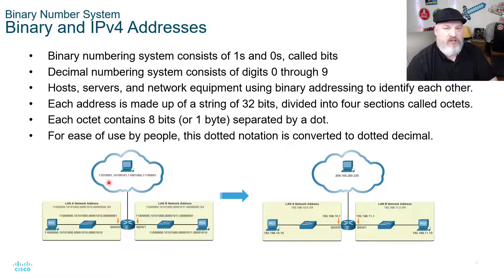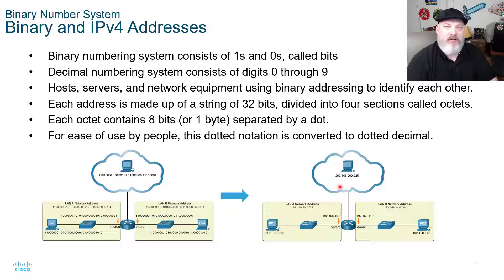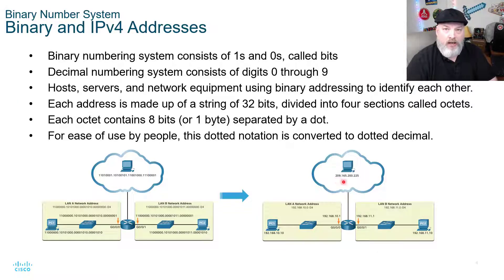So instead of trying to read out binary digits like Bender from the cartoon Futurama, we convert it to decimal to make it easier for humans to understand. So in this case, this one is 209.165.200.225. That's how it would sound: 209.165.200.225. And then we would assign each one of our IP addresses using that dotted decimal system.